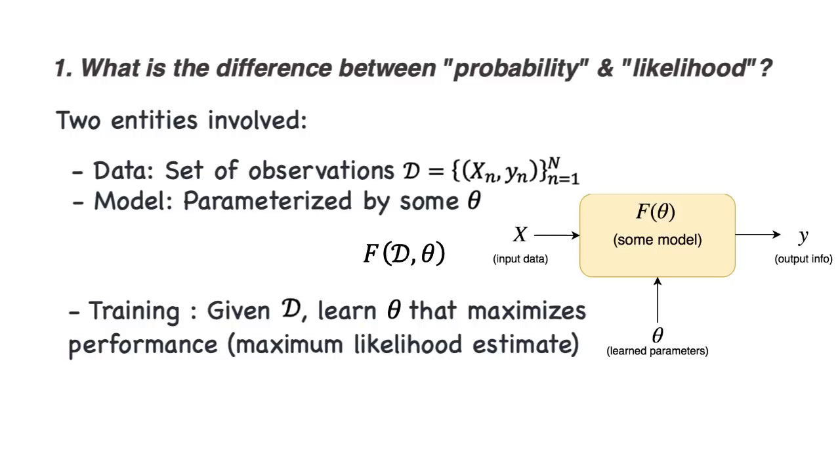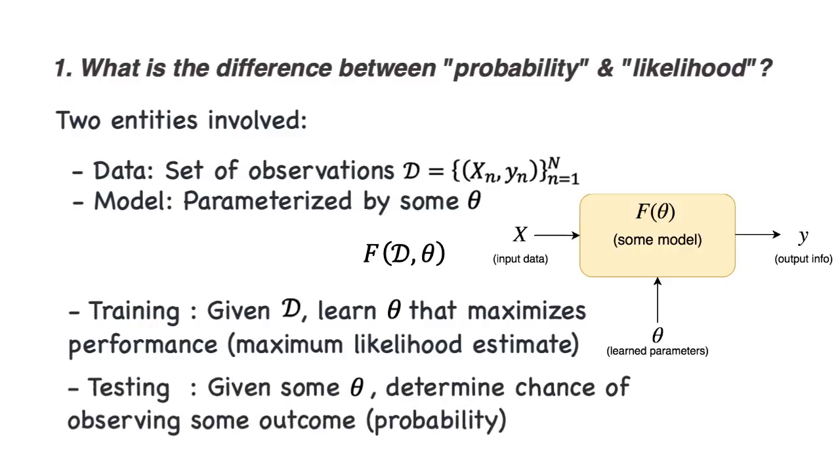During this training phase, given some D, we want to find theta that maximizes performance. This is the essence of a method of optimization called maximum likelihood estimation. After training, we have the model. So we have the email classifier, as we now have the theta. What we can do now is testing the model on unseen data. So we give the classifier some unseen emails, and then it spits out whether the email is spam or not spam. It's during this testing phase that, given some theta, we determine the chance of observing this outcome, that is, probability.